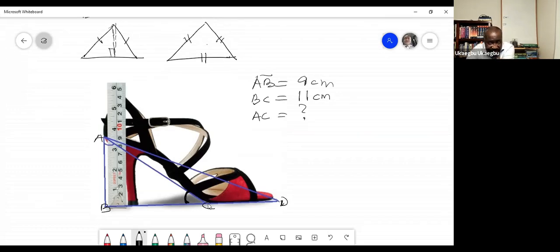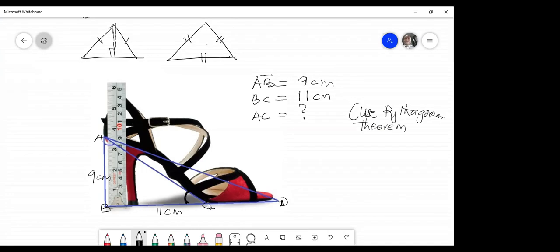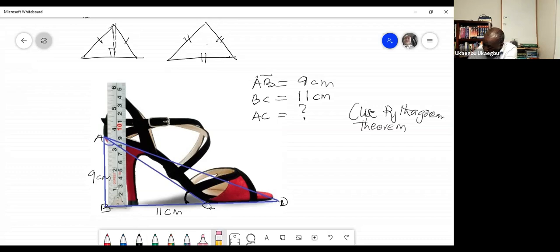You have two minutes to do that. So AB is 9, BC is 11, all in centimeters. So you are using Pythagorean theorem to get AC. Okay, who got the result? Who got the result AC using Pythagorean theorem? 14 centimeters? Yeah, I got 14 centimeters.